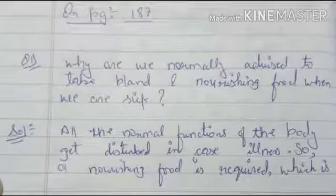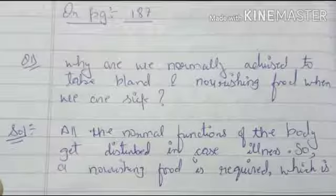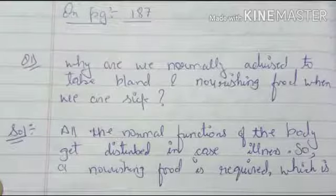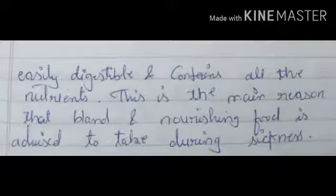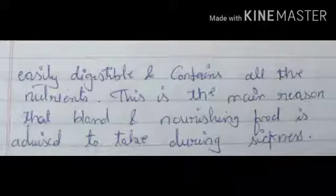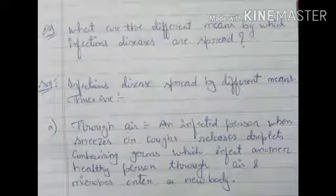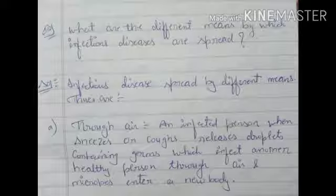On page 187, Question 1: Why are we normally advised to take bland nourishing food when we are sick? The answer is that when the body is sick, all normal functions of the body are focused on fighting the disease. So nourishing food is required that is easily digestible and contains all nutrients. This is the main reason that bland nourishing food is recommended when sick.